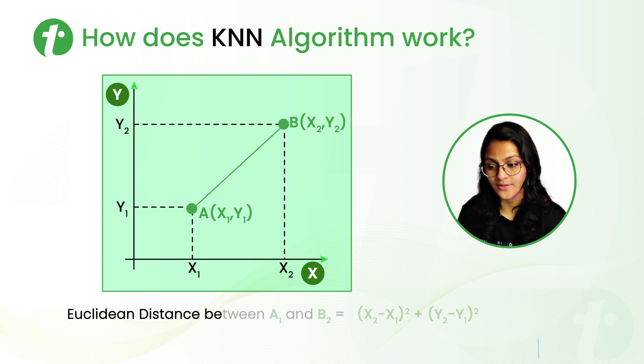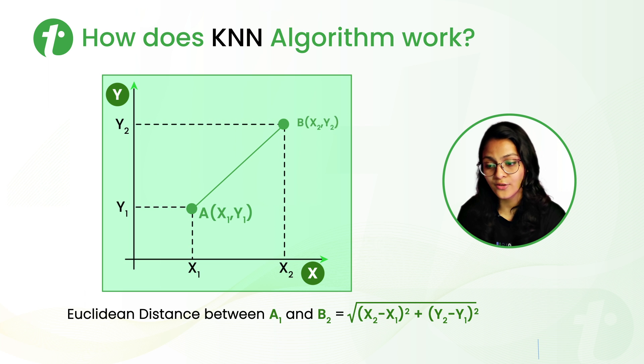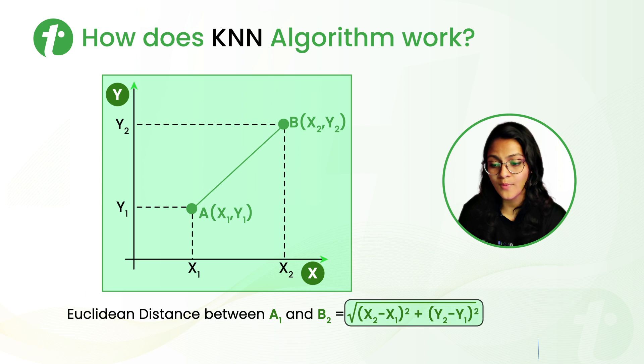For that, we use Euclidean distance which says the distance between point A (X1, Y1) and point B (X2, Y2) is given as square root of (X2-X1) whole squared plus (Y2-Y1) whole squared.